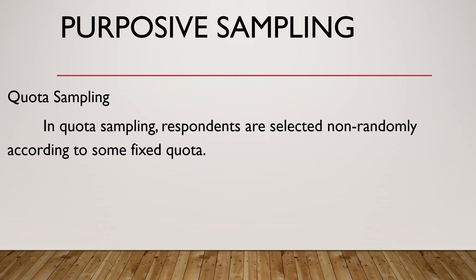Quota sampling is when respondents are selected non-randomly according to some fixed quota. Meaning, once you are able to reach your desired number of samples, you are done with your sampling process.